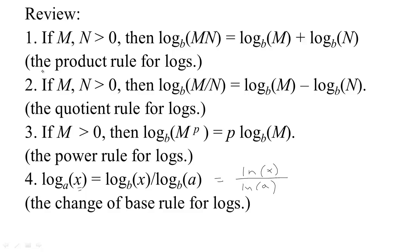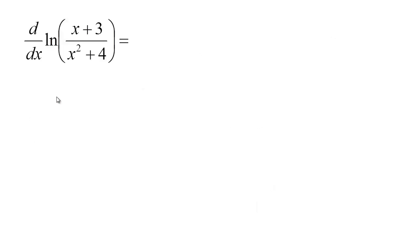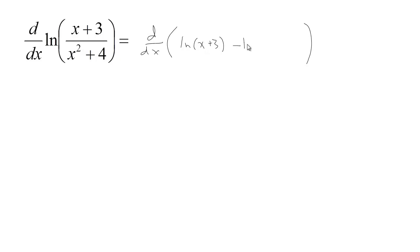Now that we have the product, quotient, power, and change of base rules for logs, let's look at some examples of how those could help us if we're going to take a derivative involving a log. In my first example, I've got the derivative of the natural log of some quotient. Before I take the derivative, what I can do is just use properties of logs. Since this is the log of a quotient, I could write this as the natural log of x plus 3 minus the natural log of x squared plus 4.